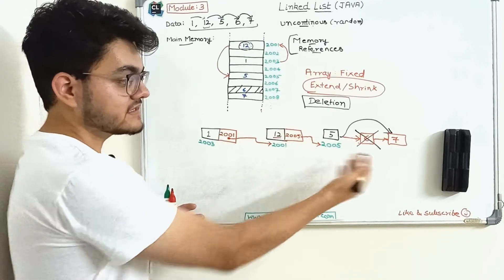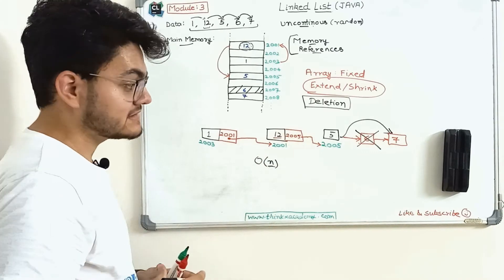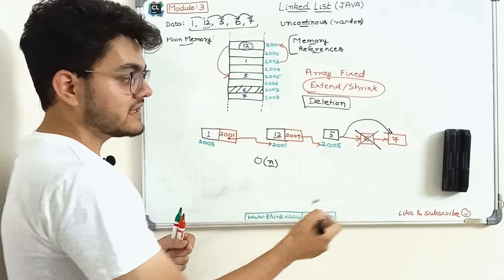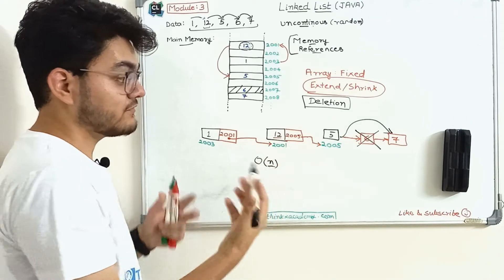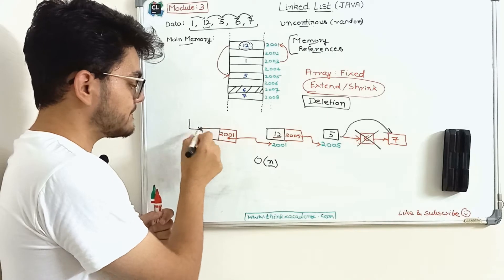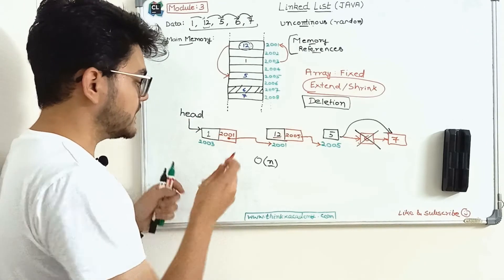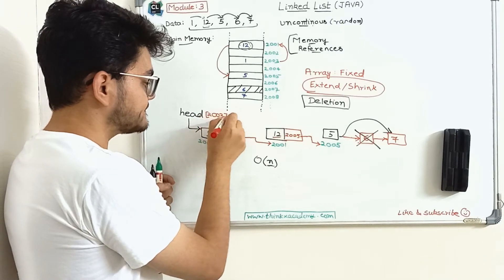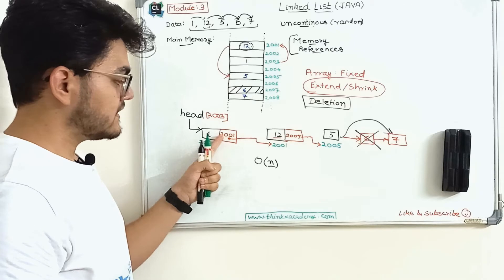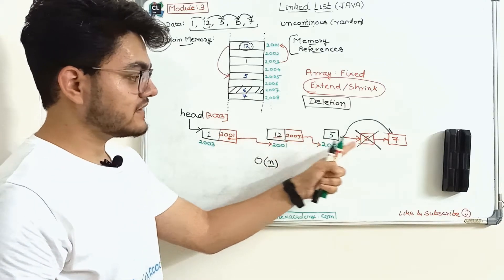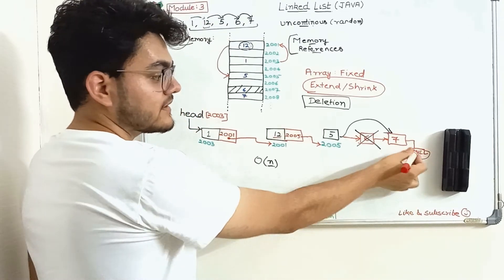The time complexity of traversing a linked list is O(n), because we go from one position to another making n accesses. We will study insertion in the middle, at the end, and at the start of the linked list. An important point: how do we know where the linked list starts? We create a head pointer — a memory reference that stores the location of the first element, which is 2003. The linked list starts from this head position. The last element has no reference, so we assign it a null reference.